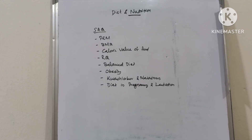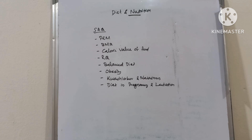Diet and nutrition, short answer questions: protein energy malnutrition, BMR, caloric value of food, respiratory quotient, balanced diet, obesity, kwashiorkor and marasmus, diet in pregnancy and lactation.